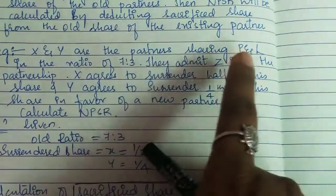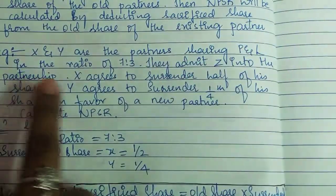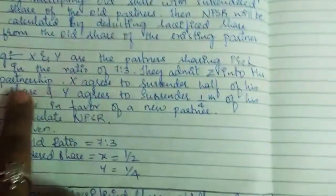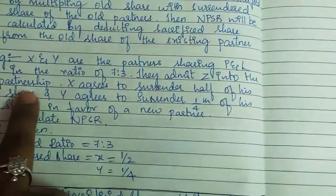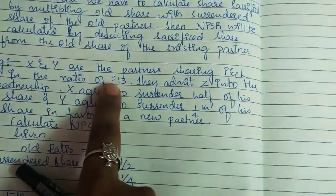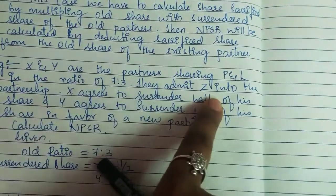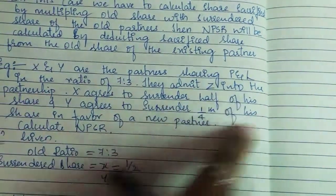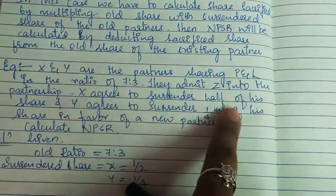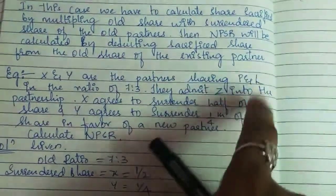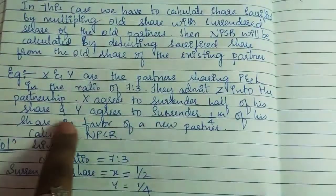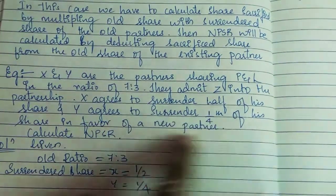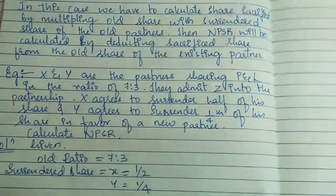Coming to an example to make the 5th case clearer: X and Y are partners sharing profit and loss in the ratio of 7:3. That is the old ratio. They admit Z into the partnership as a new partner. X agrees to surrender half, that is 1/2, of his share in favor of the new partner.